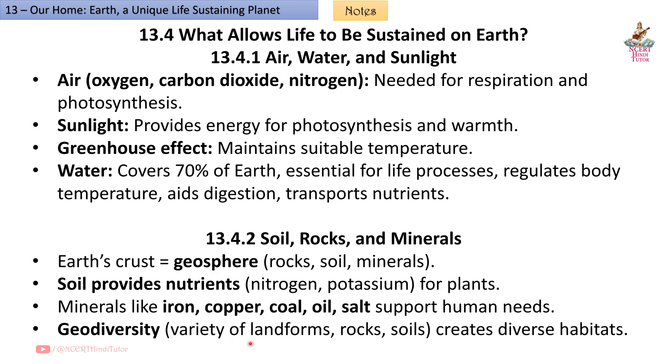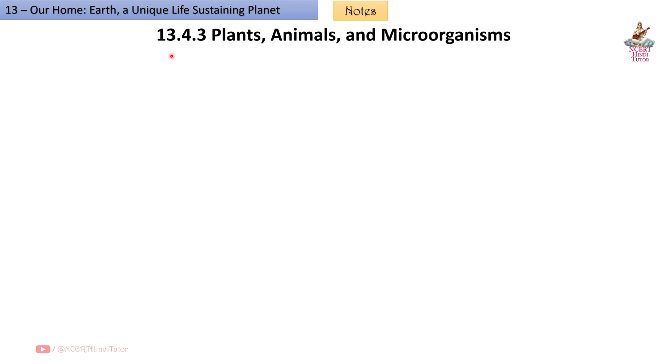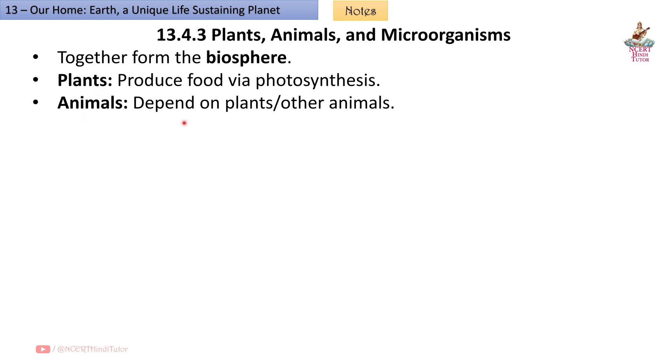Geodiversity - the variety of landforms, rocks, and soils - creates diverse habitats. 13.4.3 Plants, animals and microorganisms together form the biosphere. Plants produce food via photosynthesis. Animals depend on plants and other animals. Decomposers recycle nutrients back to soil. All organisms are interdependent.